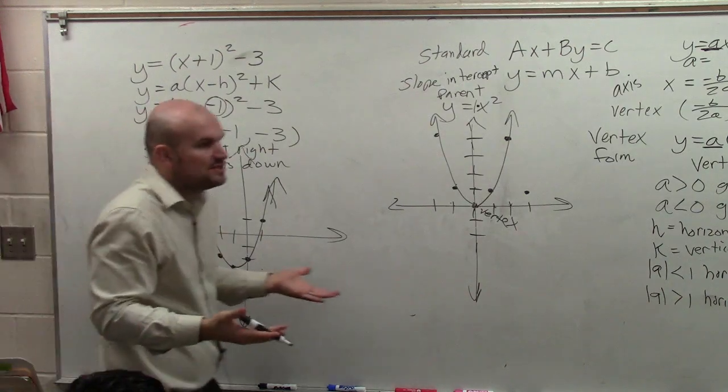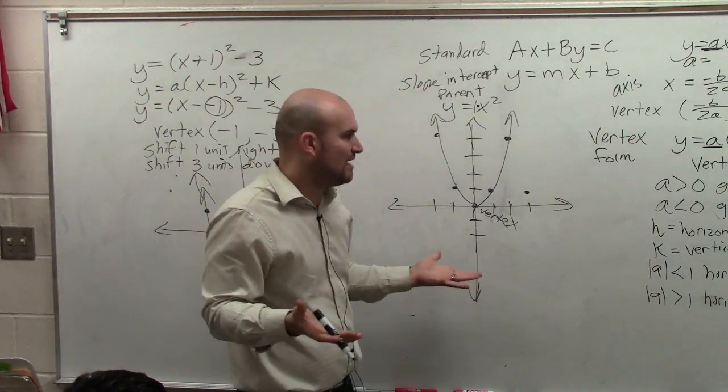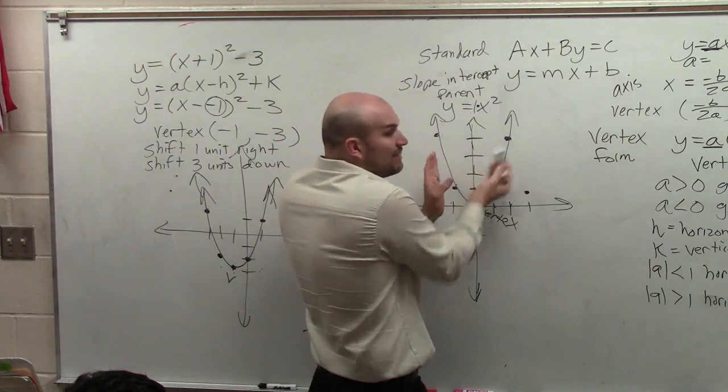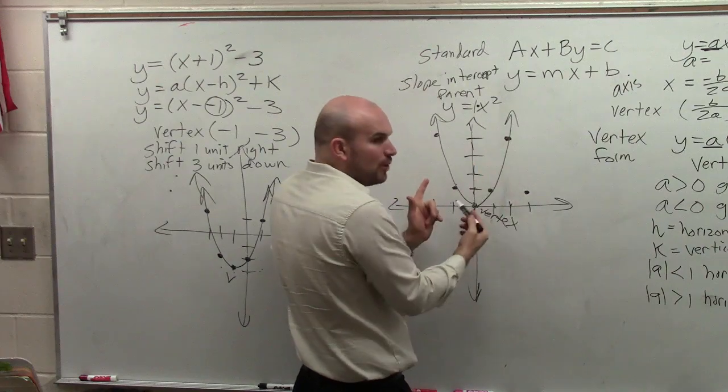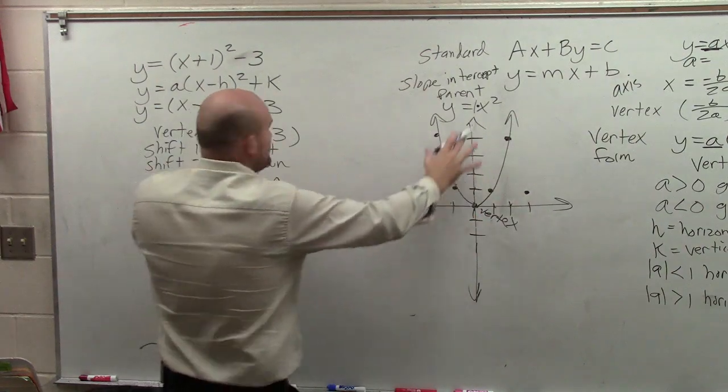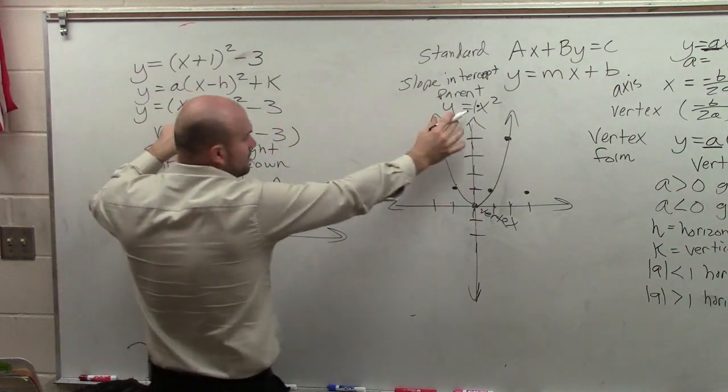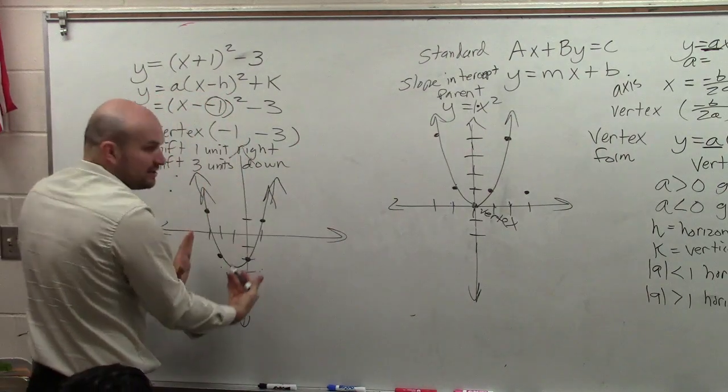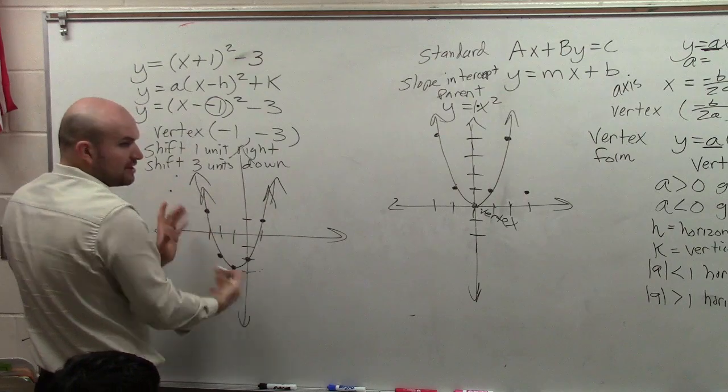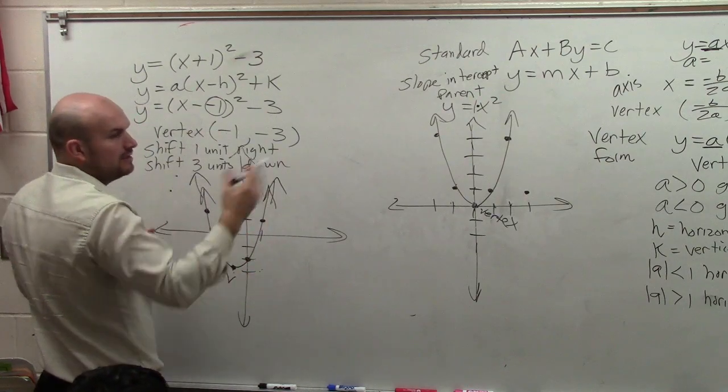Now, obviously, ladies and gentlemen, you can continue using a table of values. But by using the table of values, we proved these are our five points. So I can literally, all I'm doing from this equation to that equation. All I did was shift my graph one unit to the left and three units down. But the shape of the graph remained the same.